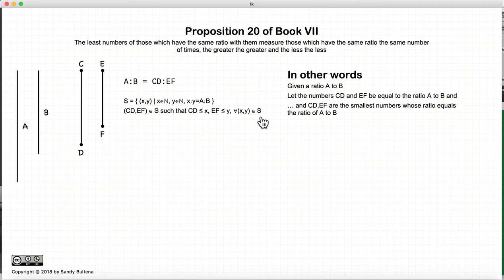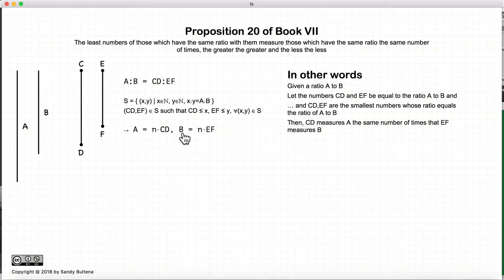For the non-mathematicians, I will restate it again. CD and EF are the smallest pair of numbers that can equal the ratio A to B. So starting with that, this proposition states that if that is true, then CD measures A and EF measures B. So that's what we're trying to say here.